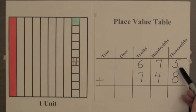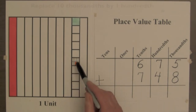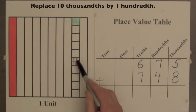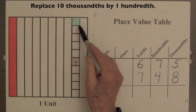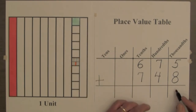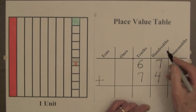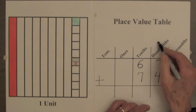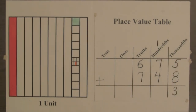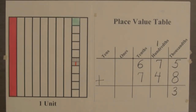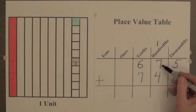Five-thousandths plus eight-thousandths is thirteen-thousandths. And we know that whenever we have ten-thousandths, we can replace that by one-hundredth. So we leave three-thousandths here. We regroup ten-thousandths to the hundredths column, and indicate that by placing a one in the hundredths column.